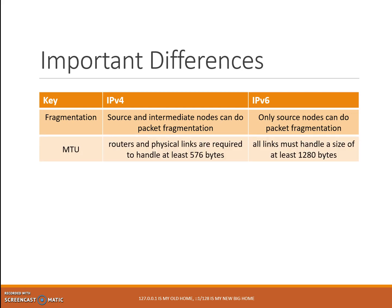Number 2: MTU — the maximum transmission unit — is the size of the largest protocol unit that can be transmitted in a single link. In IPv4, the minimum MTU that routers and physical links are required to handle is 576 bytes. In IPv6, all links must handle a datagram size of at least 1280 bytes, and the recommended size is 1500 bytes. This improves efficiency and reduces the frequency with which fragmentation is required.